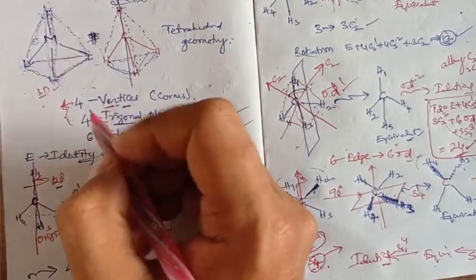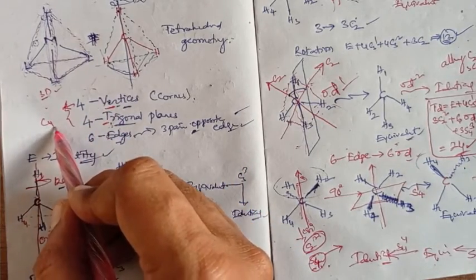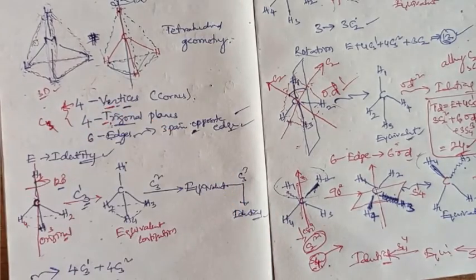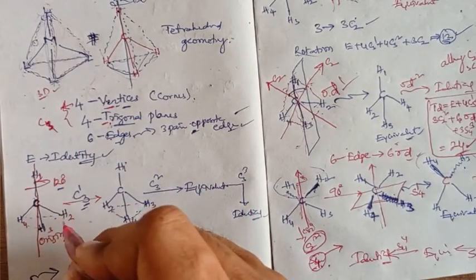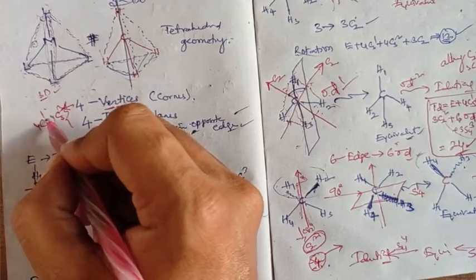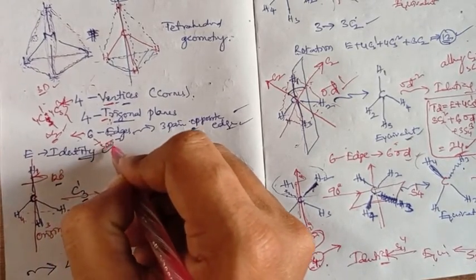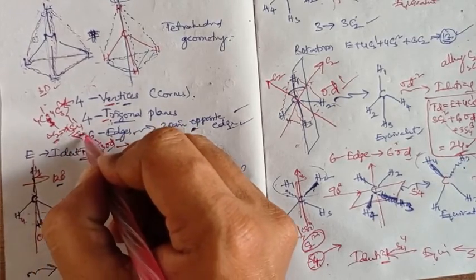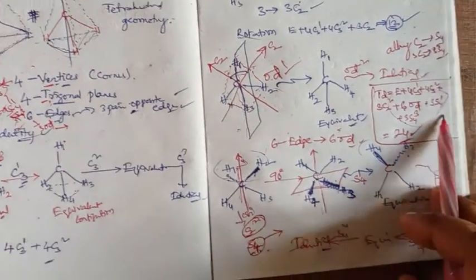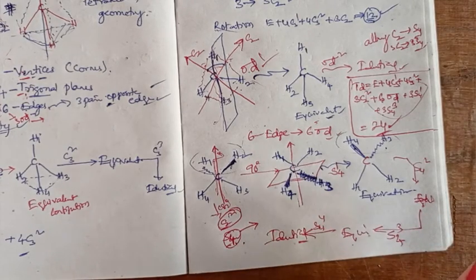In summary: from vertices to opposite trigonal planes we get C3 axes; from opposite pairs of edges we get C2 axes; from each edge we get dihedral planes (σd); and along each C2 axis we get S4 improper axes. All together there are 24 elements in the tetrahedral point group (Td). That's the tetrahedral point group — I hope this was a comfortable and flexible explanation.